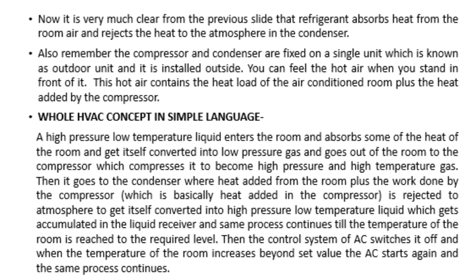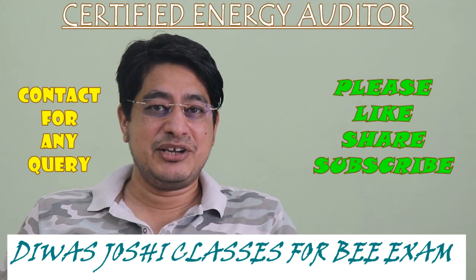In simple language, the full HVAC cycle is: high pressure, low temperature liquid enters the room, absorbs heat from the room, and converts into low pressure gas, which goes to the compressor. The compressor compresses it to high pressure, high temperature gas, which goes to the condenser. The condenser rejects the heat to the atmosphere and converts the gas into high pressure, low temperature liquid, collected in a liquid receiver. This process continues until the room reaches the required temperature, at which point the AC switches off and restarts when the temperature rises again.